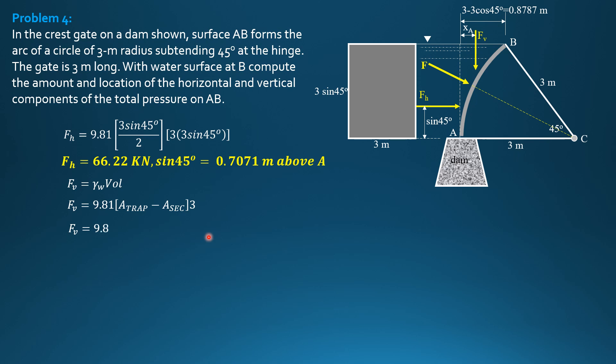Substitute F_V is 9.81, quantity 0.5 of quantity 0.8787 plus 3 times height 3 sine 45. That's the area of the trapezoid. Area of sector is 0.5 radius square times central angle in radians. So 0.5 radius square 3 square, central angle pi over 4 in radians, 45 degrees is pi over 4. Then quantity times 3. So F_V is equal to 17.06 kN.